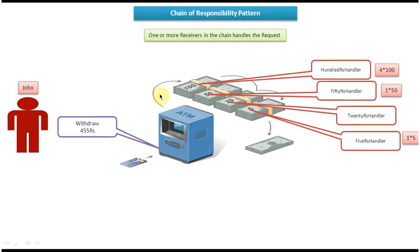The withdraw request will go to the 100 Rupees handler first. This handler does some calculation — the requested amount is 455 — so it will dispatch 400 Rupees in notes. Then the remaining 55 Rupees is sent to the next handler. The 50 Rupees handler dispatches one 50 Rupees note. The remaining 5 Rupees is passed to the 20 Rupees handler, which cannot dispatch it, so it sends the request to the 5 Rupees handler. Finally, the 5 Rupees handler dispatches one 5 Rupees note, giving a total of 455 Rupees.